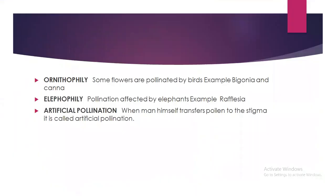Three more terms to remember: ornithophilous — some flowers are pollinated by birds, for example begonia and canna. Elephophilous — pollination affected by elephants, for example rafflesia. Artificial pollination — when man himself transfers pollen to the stigma, that is called artificial pollination.